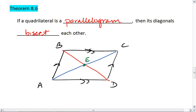What we see, though, is that BE is congruent to ED, and AE is congruent to EC because the two diagonals here bisect each other. They cut each other in half perfectly.